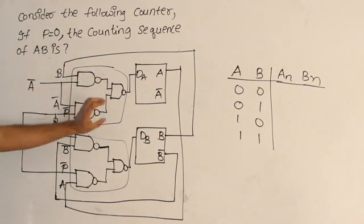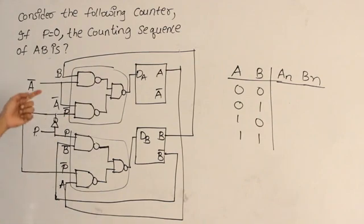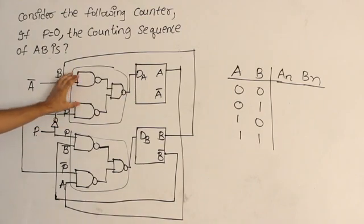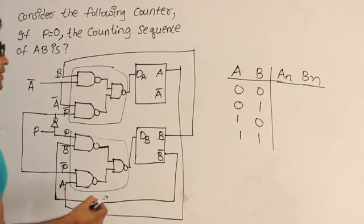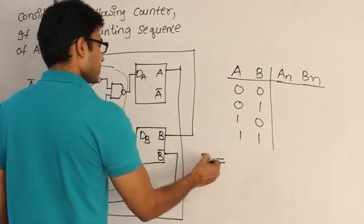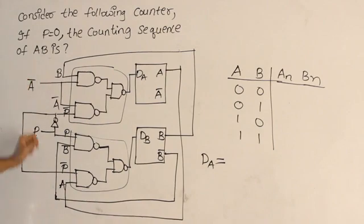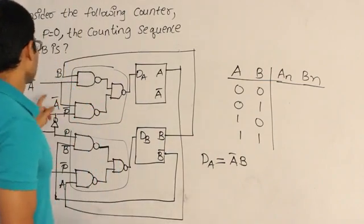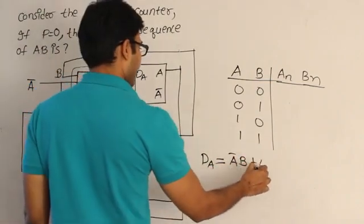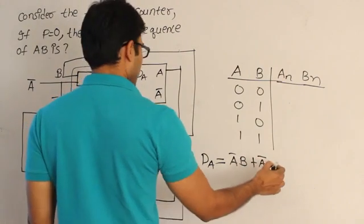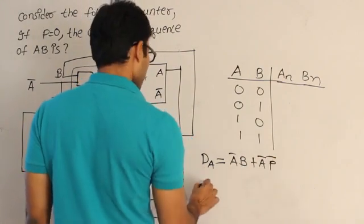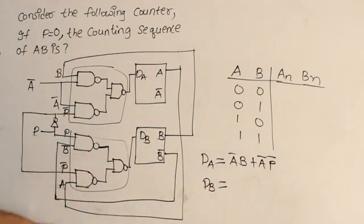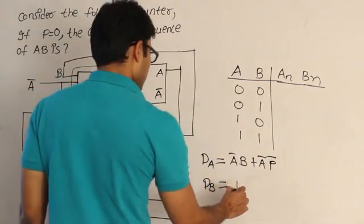Don't analyze it in terms of NAND-NAND; AND-OR is simpler. So DA is the sum of two product terms: DA = A'B + A'P'. And DB is also a sum of product terms: DB = PB' + P'A.